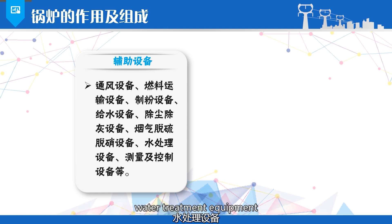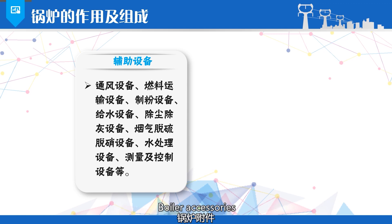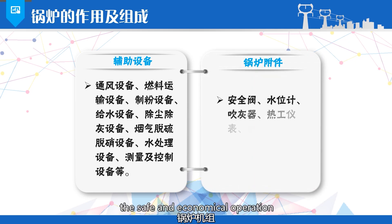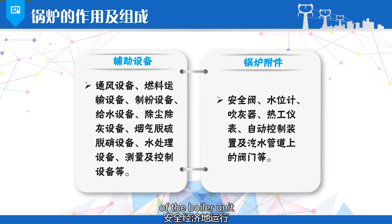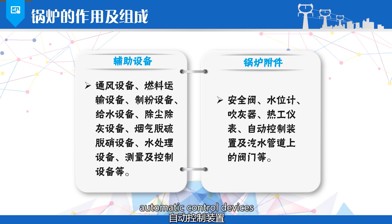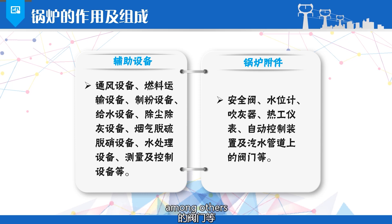Additional auxiliary equipment includes dust and ash removal equipment, flue gas desulfurization and denitrification equipment, water treatment equipment, measurement and control equipment, etc. Boiler accessories are the ancillary equipment on the boiler body and auxiliary equipment used to ensure the safe and economical operation of the boiler unit. These mainly include safety valves, water level gauges, soot blowers, thermal instrumentation, automatic control devices, and valves on the steam and water pipes.